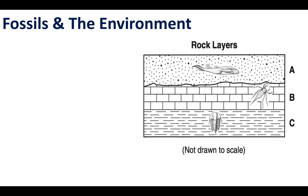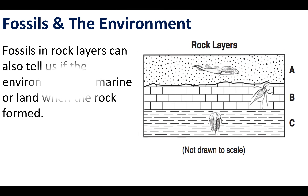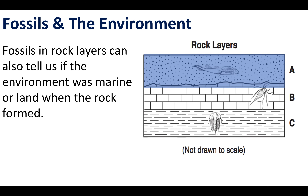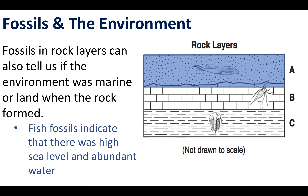Another thing that fossils can provide information on is the type of environment — specifically, was the environment marine and filled with water with sea level really high, or was it more land-based with sea level really low and land dominating? Looking at rock layer A at the top, it shows the fossil of a fish organism. When we find fish fossils in rock layer A, that indicates that sea level was really high and water was abundant on earth, which tells us about the environment in the past.